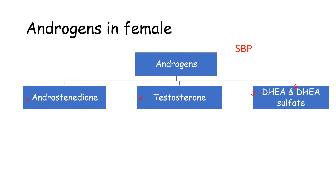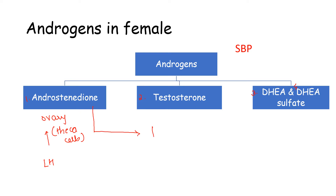Androstenedione is majorly produced from the ovary. Luteinizing hormone acts upon the theca cells of the ovary, which leads to the production of androstenedione, and most of this androstenedione is converted to another form of androgen — testosterone.